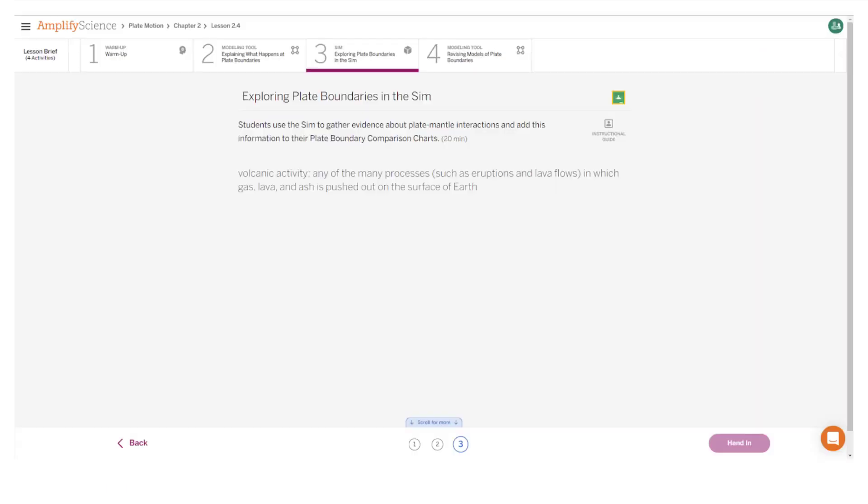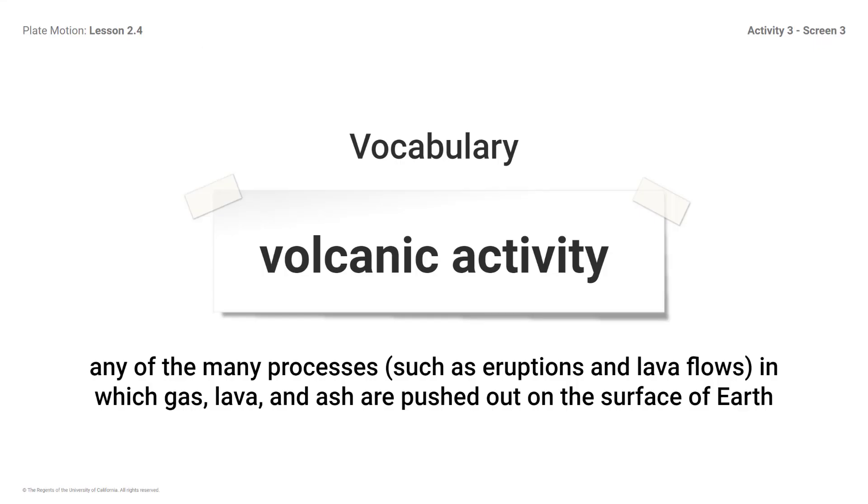Here's what your student screen looks like for this part of the lesson. Vocabulary: Volcanoes—any of the many processes, such as eruptions and lava flows, in which gas, lava, and ash are pushed out onto the surface of Earth. Students, remember to look at the glossary if you need more support.